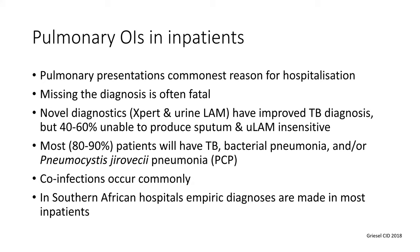Most patients will have one of the big three: TB, bacterial pneumonia, or pneumocystis — sometimes called PCP, sometimes PJP. Co-infections occur commonly, which is a point I want to hammer home, and in our setting in public sector hospitals, we're generally in the business of making empiric diagnoses for much of what we see.